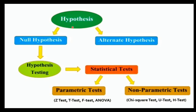Basically, you have studied the hypothesis — what do you mean by hypothesis? In that, null hypothesis and alternate hypothesis, two types. In null hypothesis, hypothesis testing is there. In hypothesis testing, we have statistical tests. Statistical tests are divided in two parts: parametric tests and non-parametric tests.